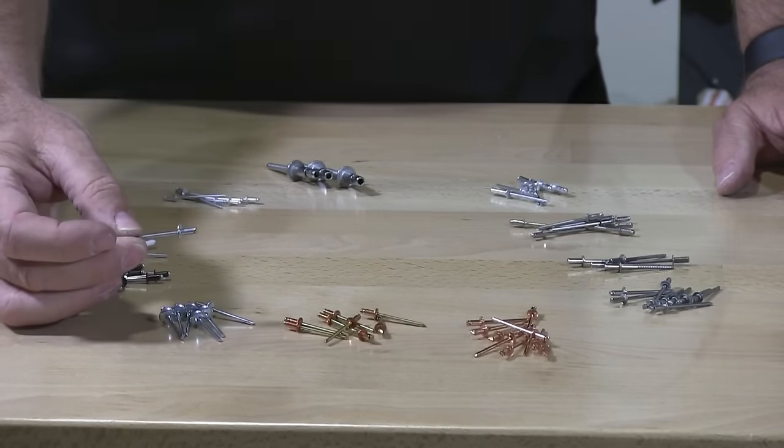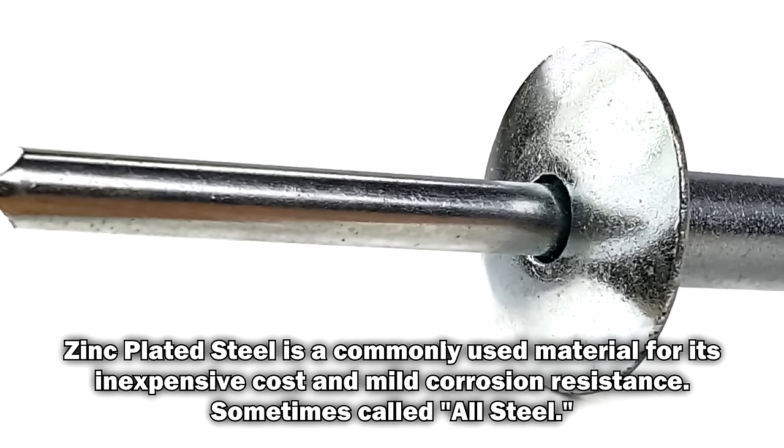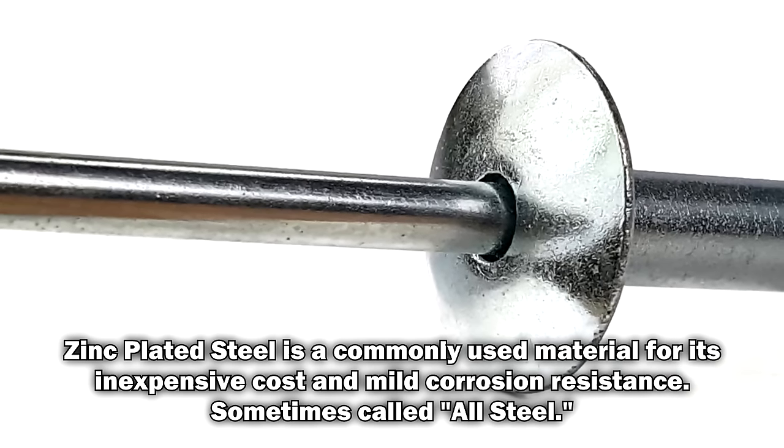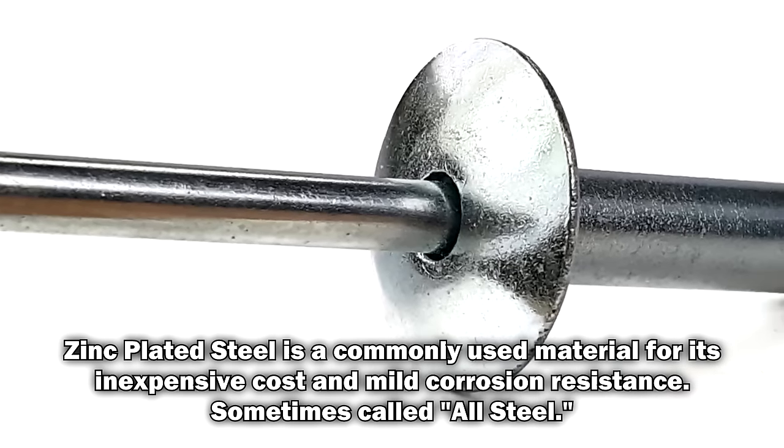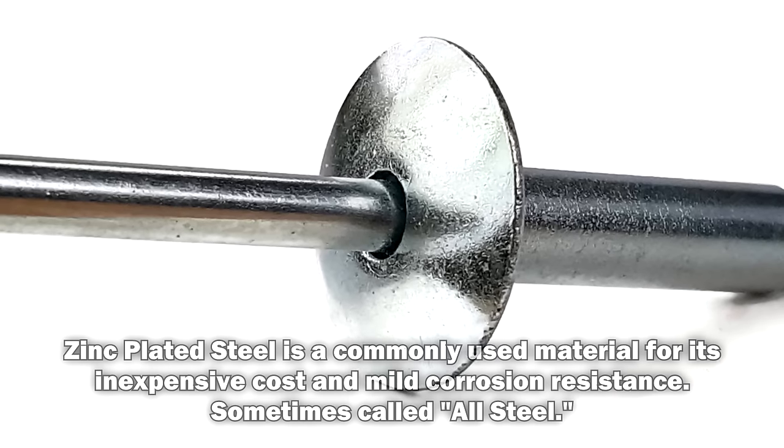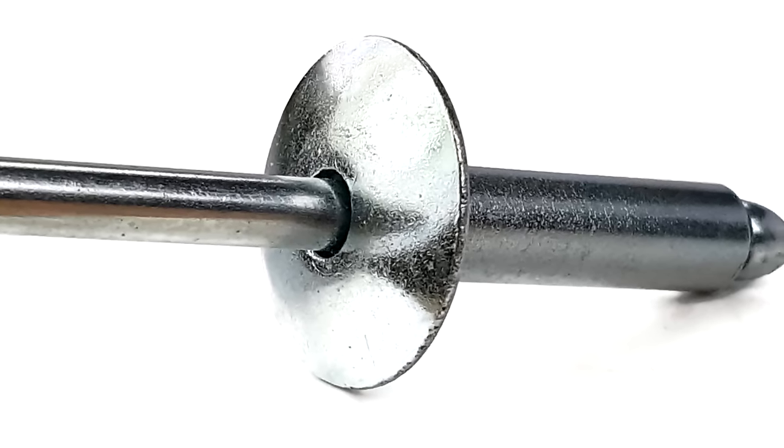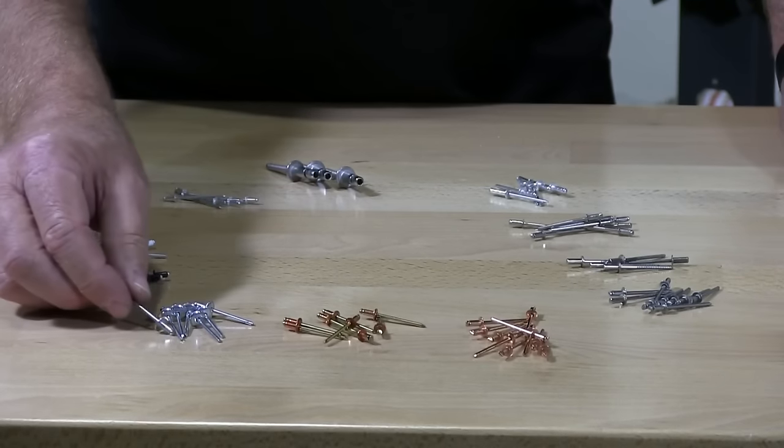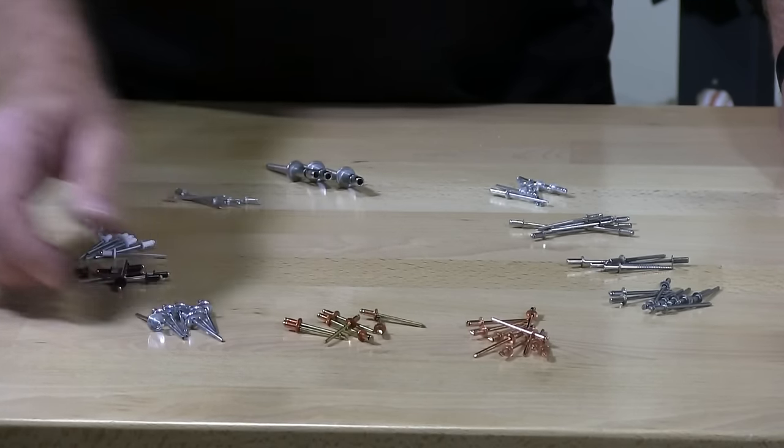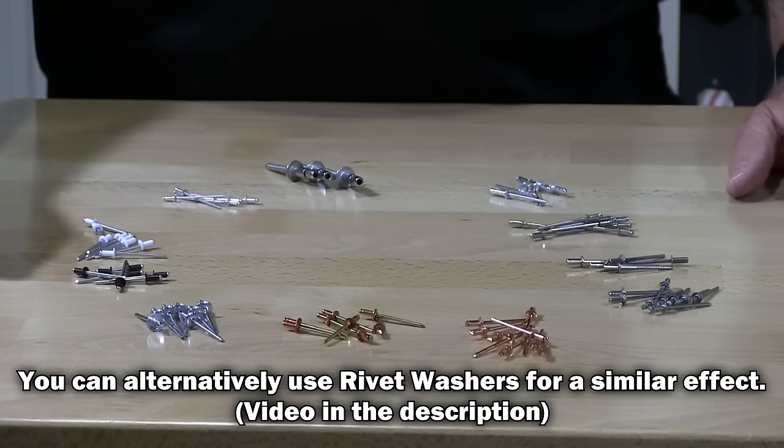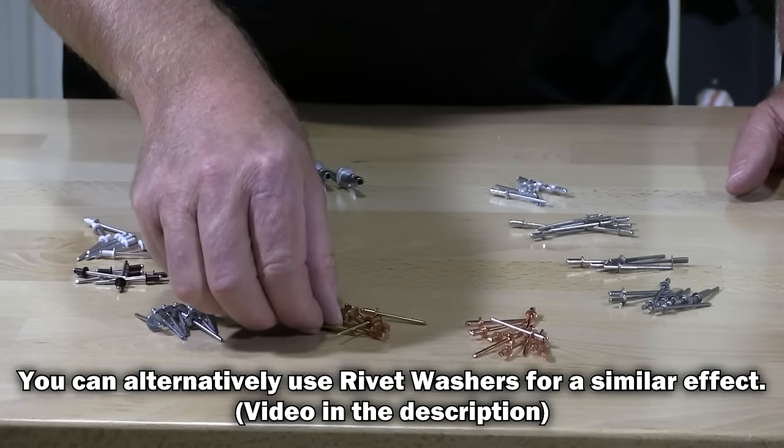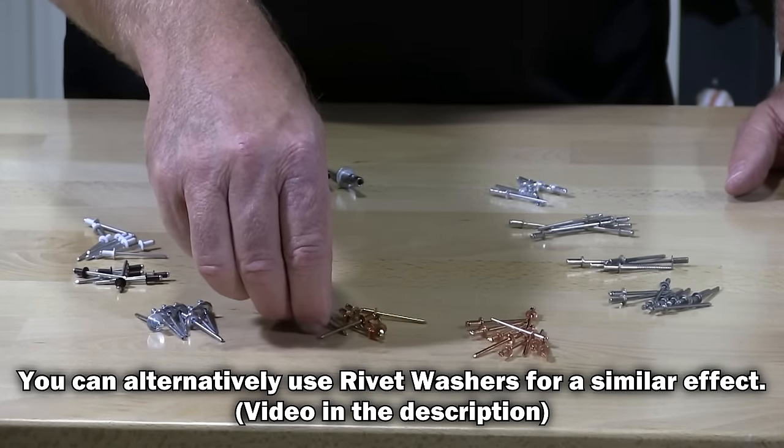There's also these zinc rivets. These are large flange. You can see here the large dome flange on this hat so it covers more surface when you're installing the rivet. Sometimes you need more surface. You're holding a larger piece of material.